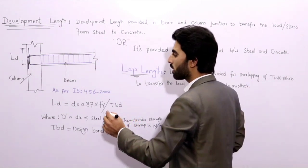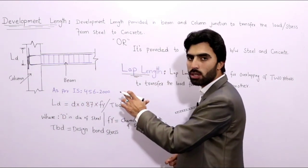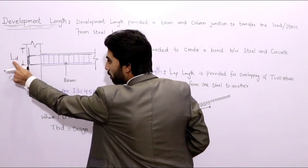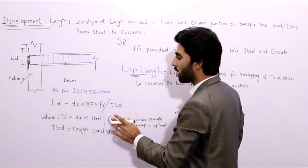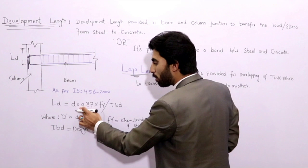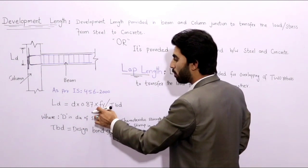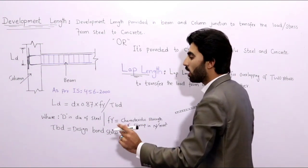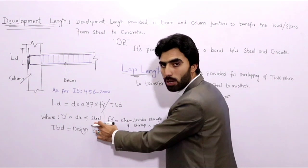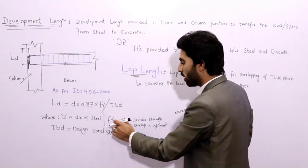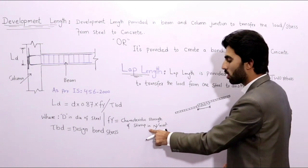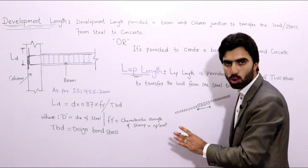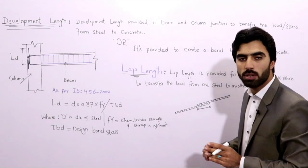Now let's look at the formula for development length as per IS 456:2000. We denote development length as LD. The formula is: LD = (Φ × 0.87 × Fy) / (4 × τbd), where Φ is the diameter of the steel bar, Fy is the characteristic strength of the steel in N/mm², and τbd is the design bond stress.